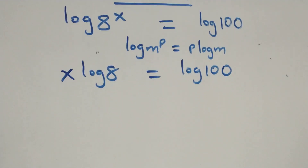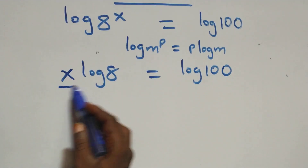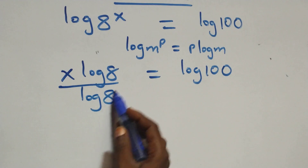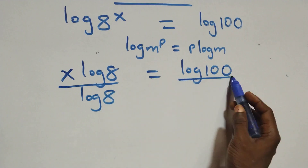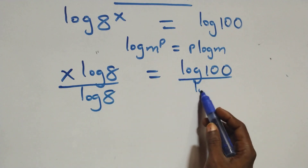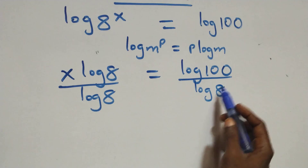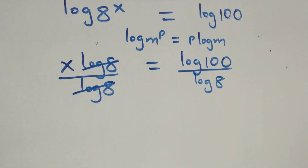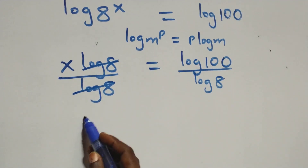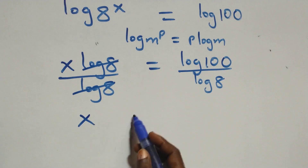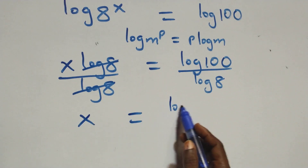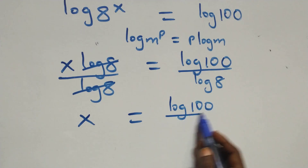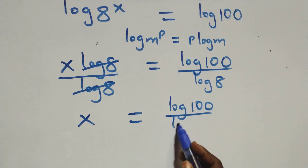Now from here we divide both sides by log 8 — we divide this side by log 8, and also divide this side by log 8. This implies log 8 cancels each other, and we have x equals to log 100 over log 8.